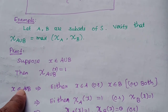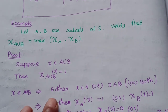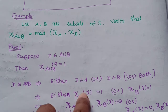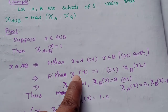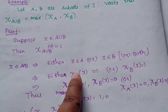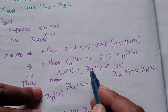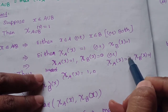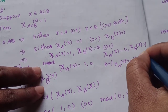If x belongs to A union B, there are three possibilities. First, x belongs to A and the characteristic function of A is 1. Second, x belongs to B but not A, so psi of A of x is 0 and psi of B of x is 1. Third, x belongs to both A and B, so psi of A of x is 1 and psi of B of x is 1.